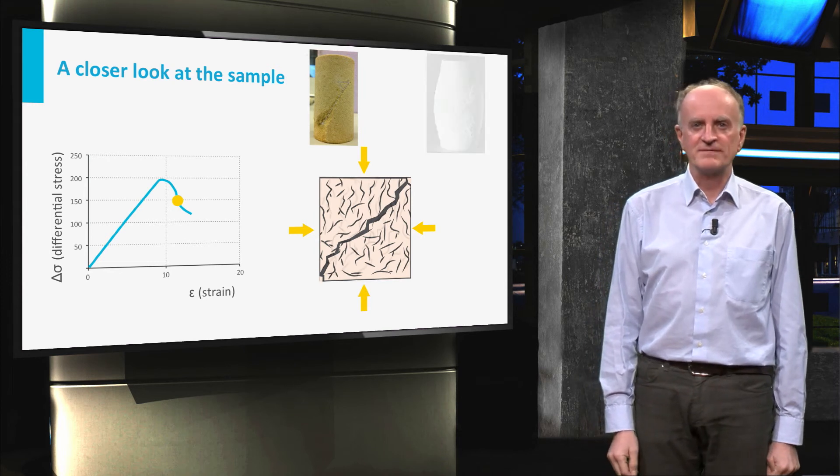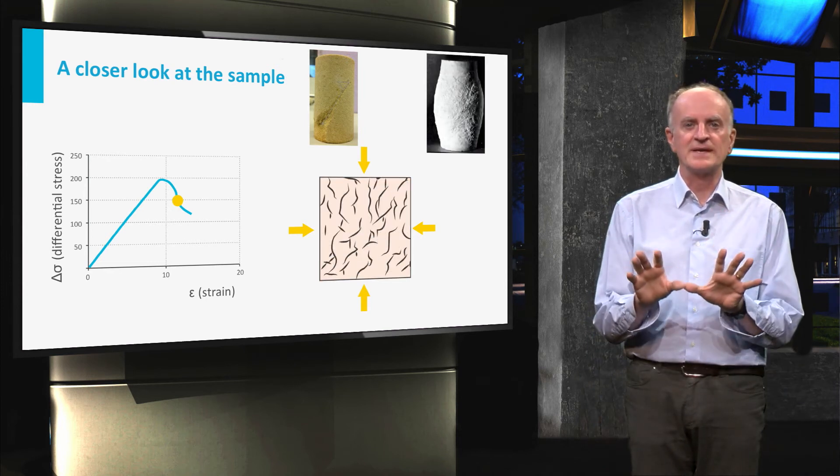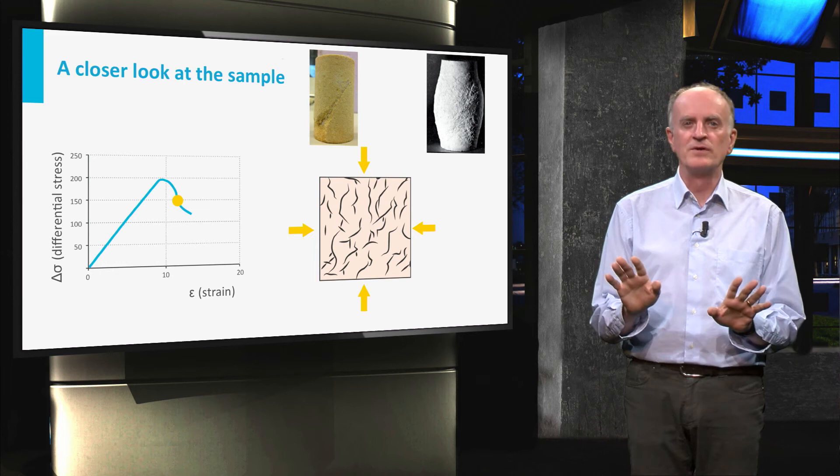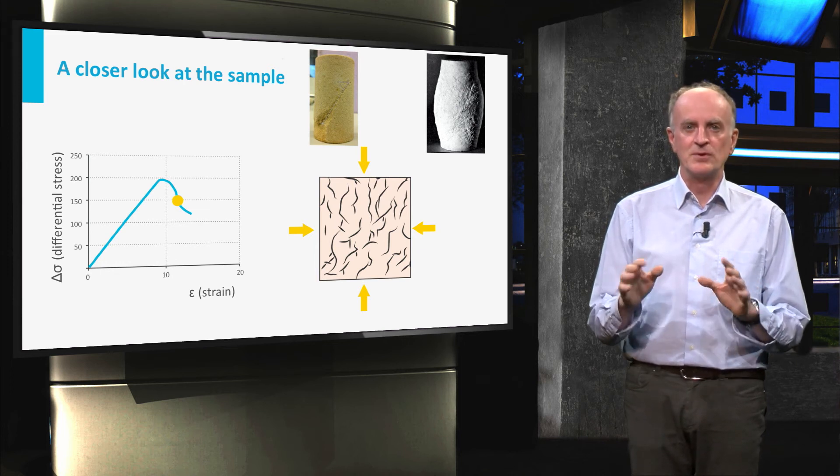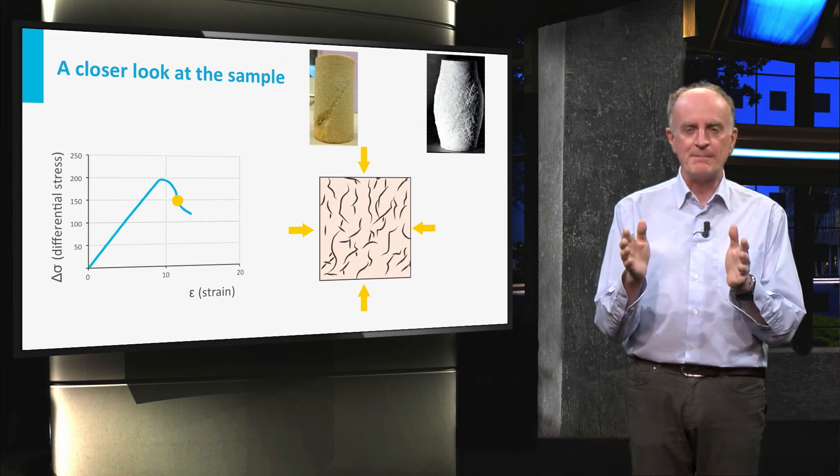At high confining pressure, fractures will be distributed throughout the entire sample. No through-going fault is developed and the sample will deform, acquiring a barrel shape.